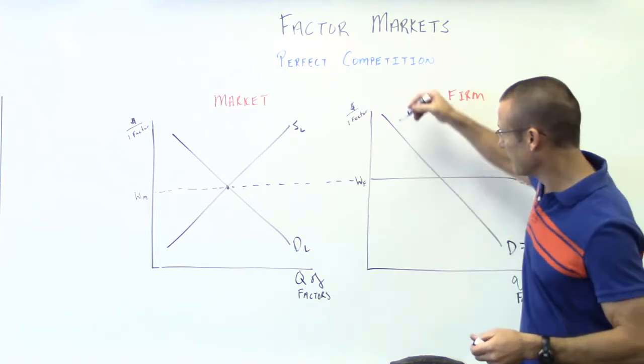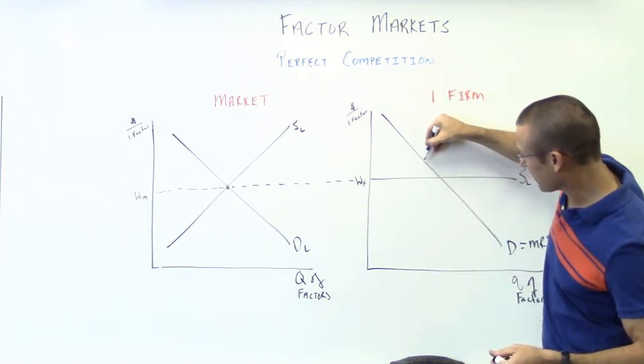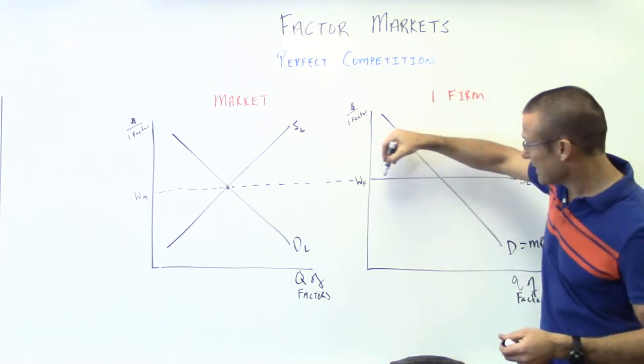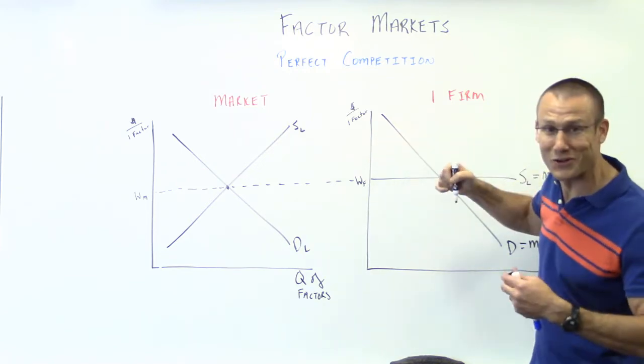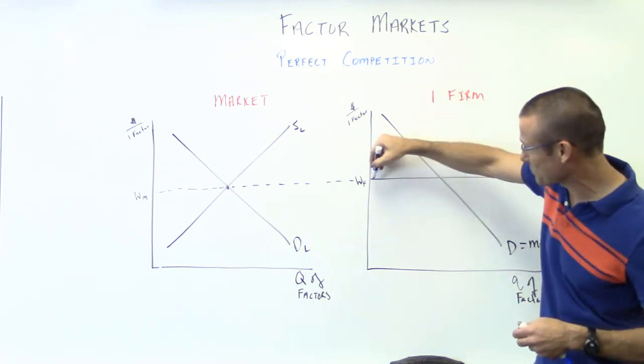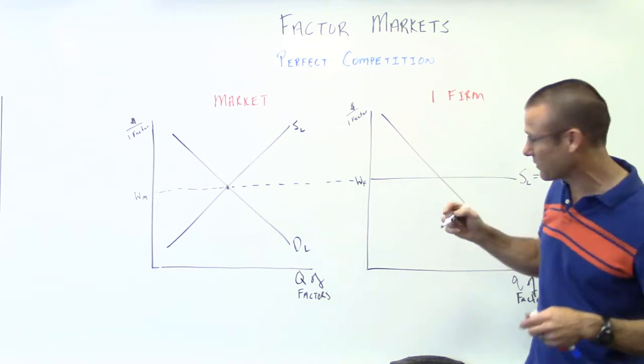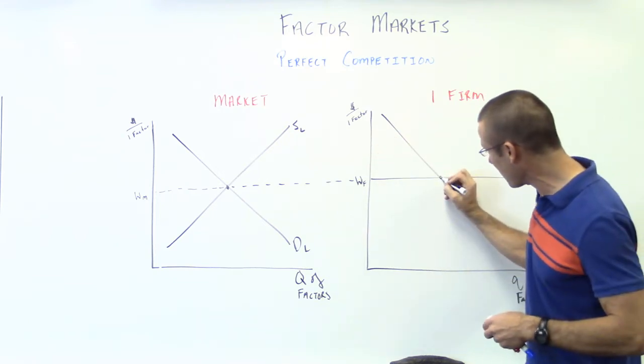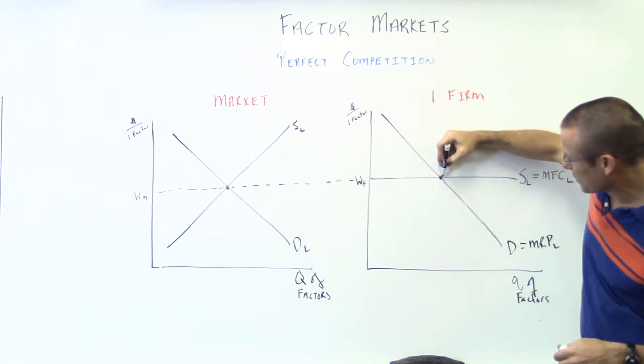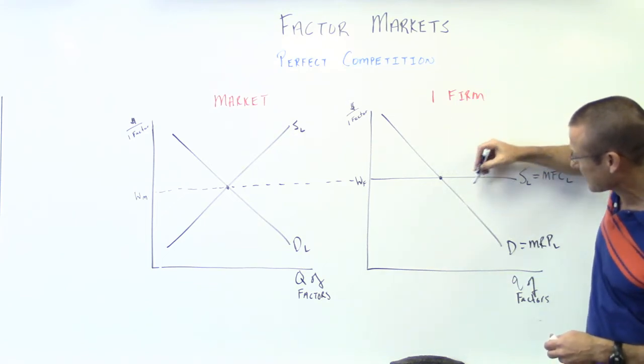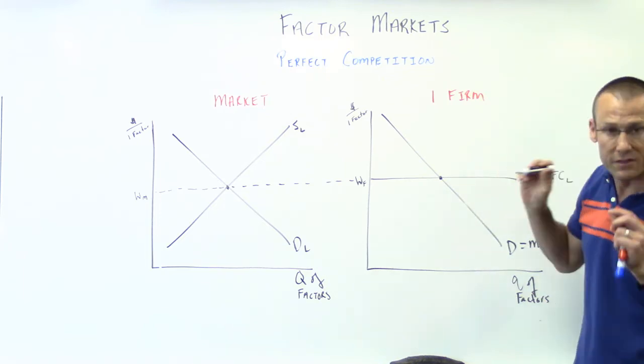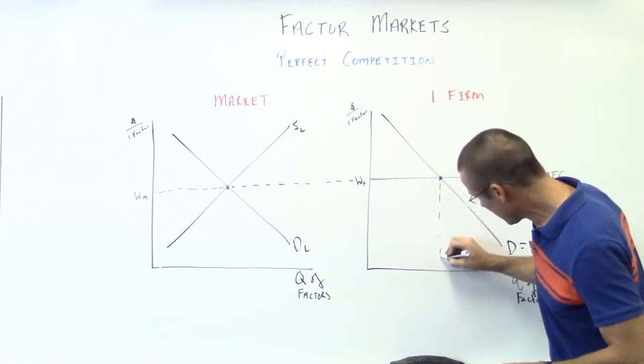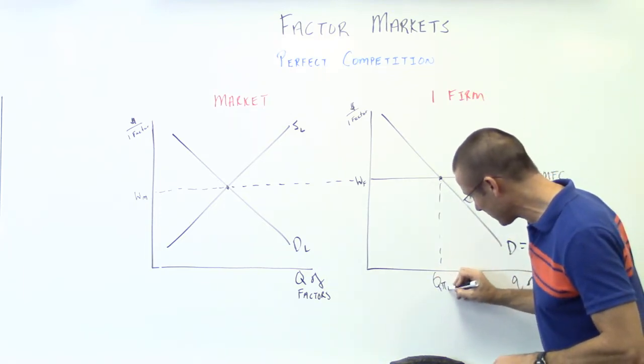So how many laborers are going to be hired? Not hard. As long as the marginal benefits, the marginal revenue product is more than the marginal factor cost, as long as the marginal revenue product is more than the marginal factor cost of hiring those workers, we're going to hire them. We're going to hire them all the way to right there. But as soon as the marginal factor cost exceeds the marginal revenue product that the business is getting, they're going to stop. So Q profit max.